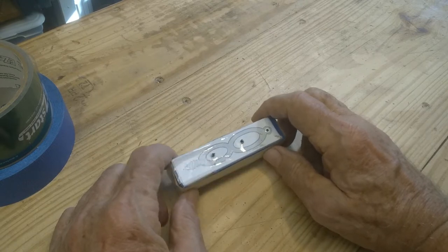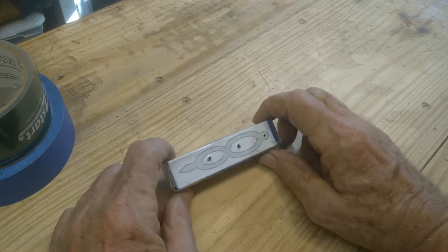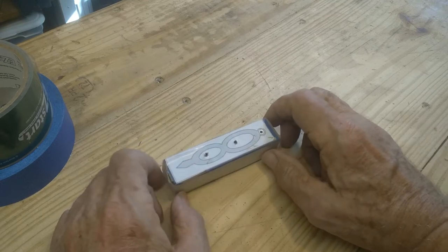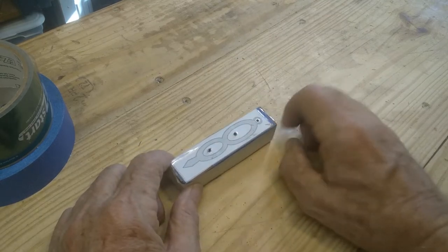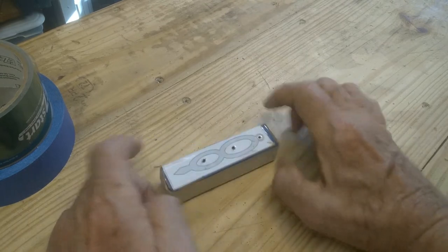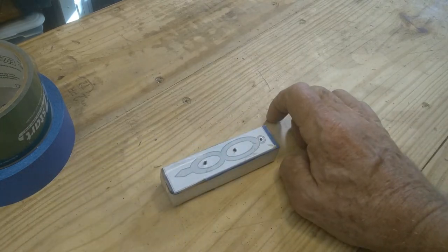So what I'm going to do now, I'm going to take this back over to the scroll saw, and I'm going to go through there and make these three cuts, and then make the external cut, and then I'll bring it back over here, and we'll look at it and take it apart.